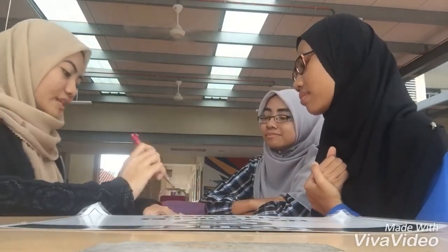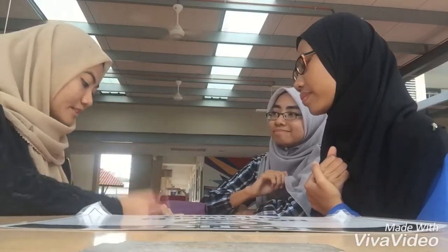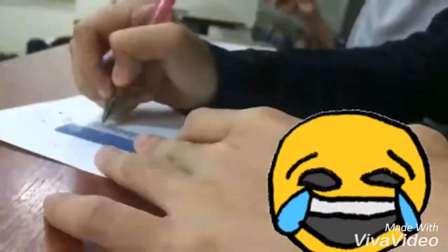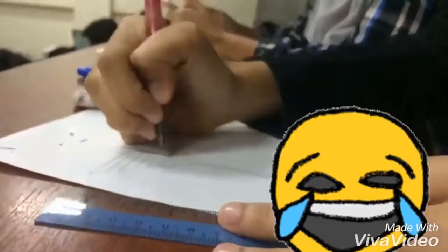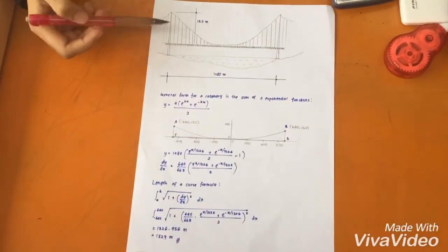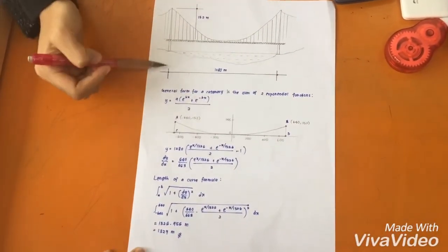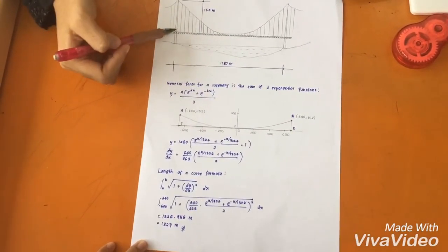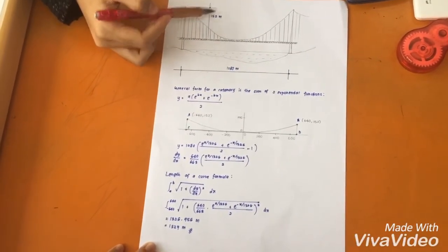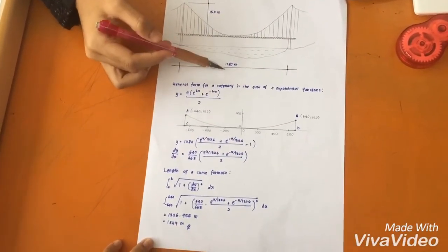It's just a simple question but it takes so much time to do this. Okay, so let's see the solution. This is the Golden Gate Bridge and this is the length between Tower 1 and Tower 2. This is the height, which is 152 meters, and the length is 1280 meters.